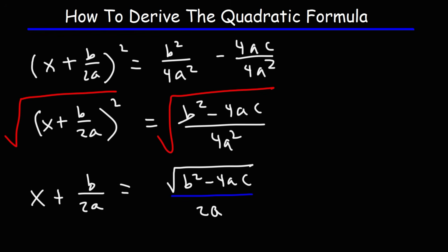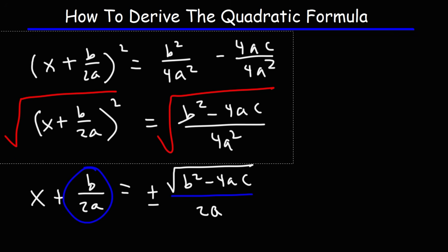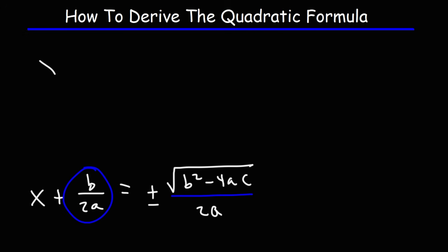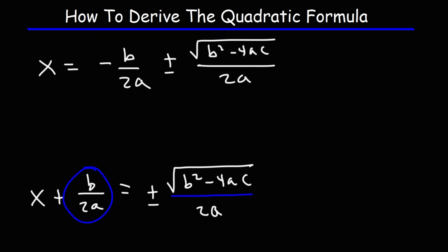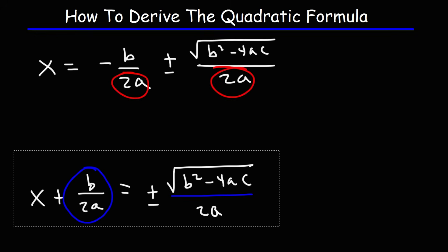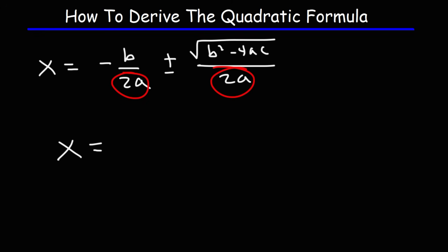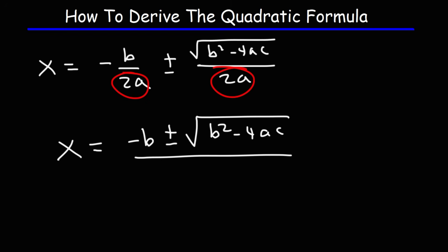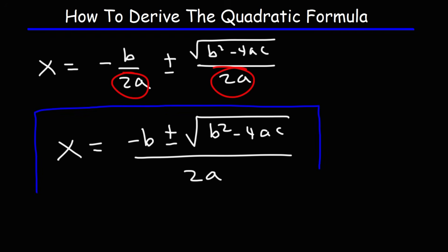Because we took the square root of the right side we add plus or minus. The next thing we need to do is subtract b over 2a from both sides — it's positive on the left but negative on the right. So we have x equals negative b over 2a plus or minus the square root of b squared minus 4ac over 2a. Since they share a common denominator, we combine into a single fraction: negative b plus or minus the square root of b squared minus 4ac, all over 2a.